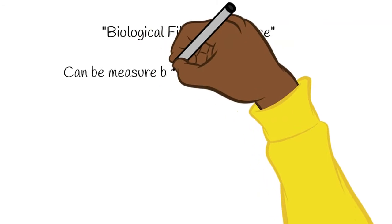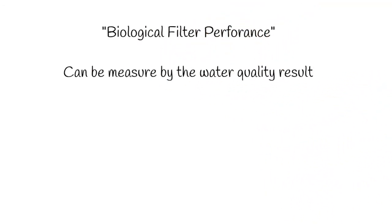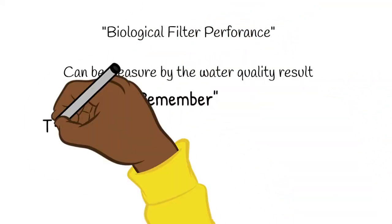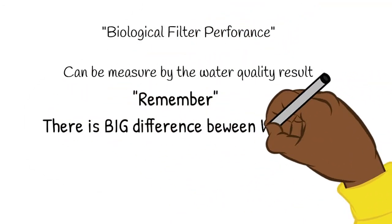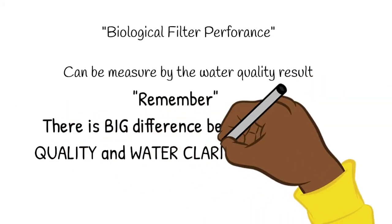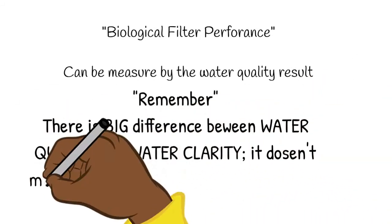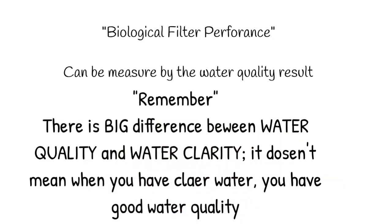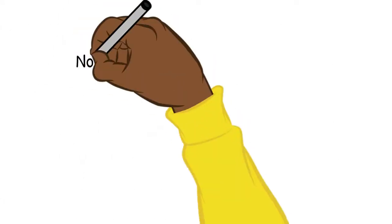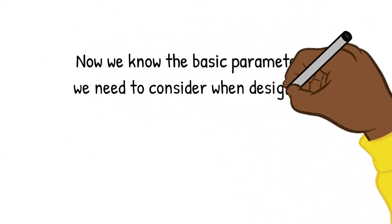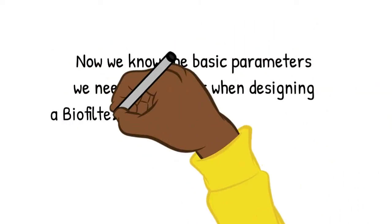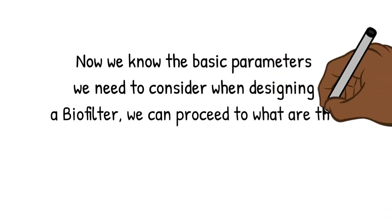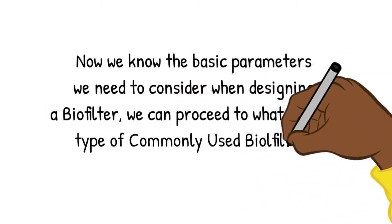Biological filter performance can be measured by water quality results. Remember, there is a big difference between water quality and water clarity — having clear water does not mean you have good water quality. Now that we know the basic parameters to consider when designing a biofilter, we can proceed to the types of commonly used biofilters.